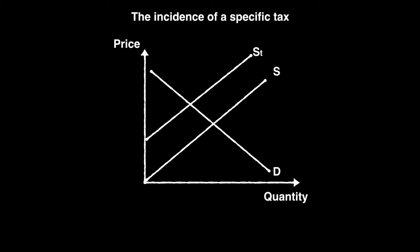This is the part where it often gets tricky for students, so I've tried to break it down into manageable chunks. If you have difficulty, slow down the video, pause it, and review the parts where you are unclear. We're going to see the incidence, or burden, of tax. We've already established that the price consumers pay is PC. The difference between the supply curves is the value of the tax, but the price increase from equilibrium to PC is not equal to the entire amount of the tax. At PC there are Q1 units produced. The per unit tax is represented by the distance between the supply curves. After the tax is deducted from the price paid by the consumer, we have the price received by the seller, PS. The value of the tax is the difference between PC and PS.